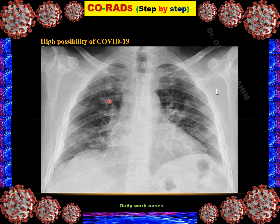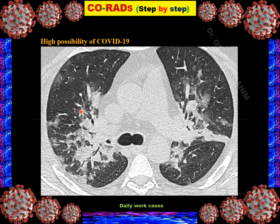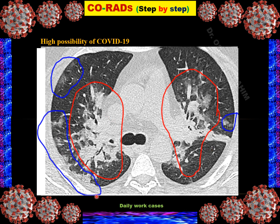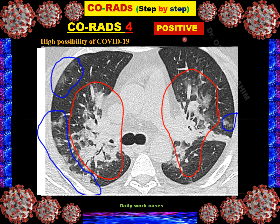Case 12: Frontal chest radiograph showing disease opacities in the perihilar distribution with additional peripheral abnormality. HRCT recommended and performed, showing ground glass opacity in peripheral distribution with consolidation and abnormality also in the perihilar locations. The perihilar distribution is more prominent than the peripheral, so the possibility of COVID-19 is high but not very high — classified as CO-RADS 4. RT-PCR was positive.